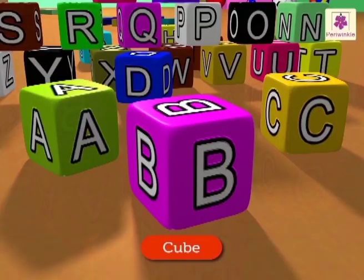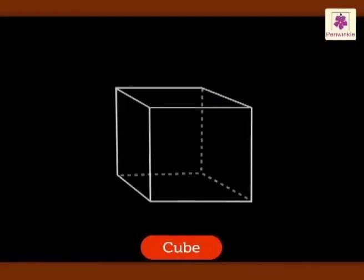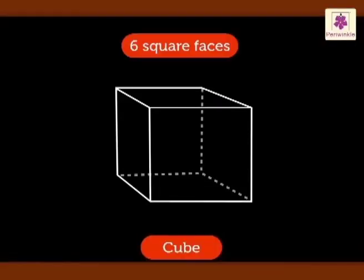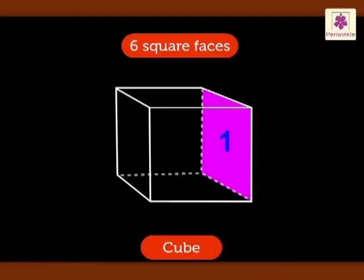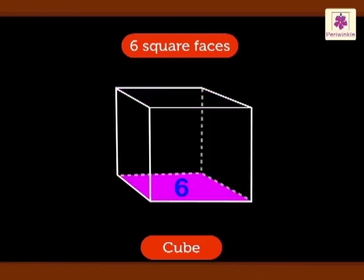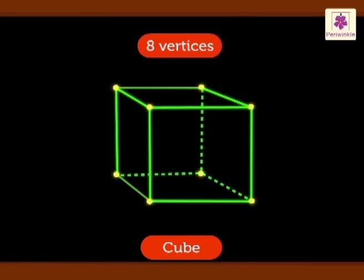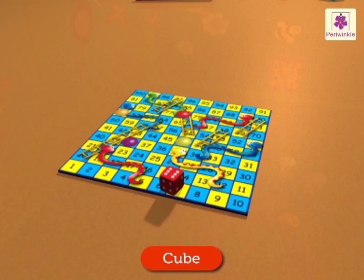The ABC blocks on the floor are cube shaped. A cube has six square faces, 12 edges, and eight vertices. The dice on the game board is also cube shaped.